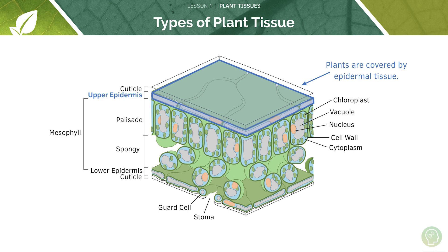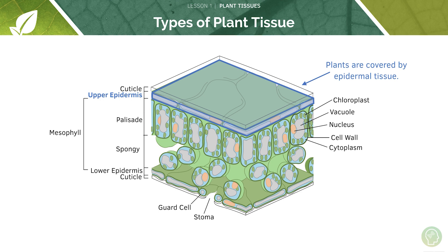The cuticle has two major functions to remember. First, it covers the plant to decrease water loss by evaporation — without the cuticle, water would evaporate out, which would be inefficient for photosynthesis. Second, the cuticle is transparent to light so that as much light as possible can make its way through. If the cuticle weren't transparent, light wouldn't penetrate to the chloroplasts further below the epidermis. So it decreases water loss by evaporation and allows light through to where photosynthesis occurs in chloroplasts.